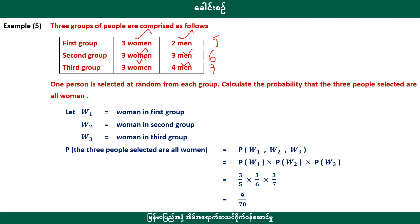For example, 1% is selected from the last group. As I perform in another group, the probability is 3%. Calculate the probability that three people selected are all women.